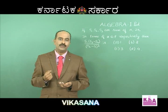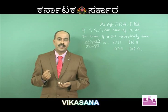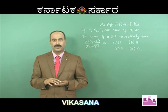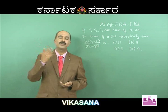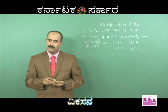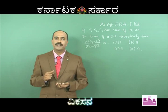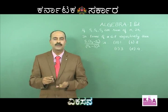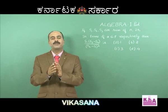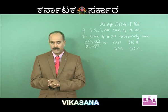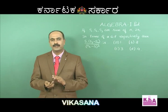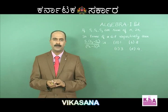Sn is equal to n by 2 into 2a plus n minus 1 into d. Then, n by 2 into a plus Tn. In terms of AP, GP, you will learn the general term, sum of n terms, and HP.